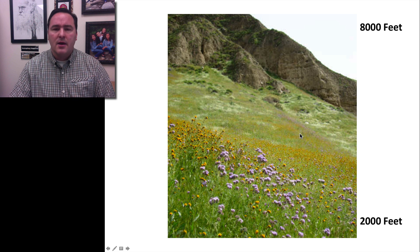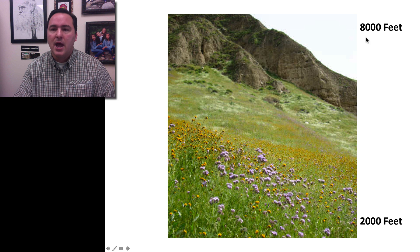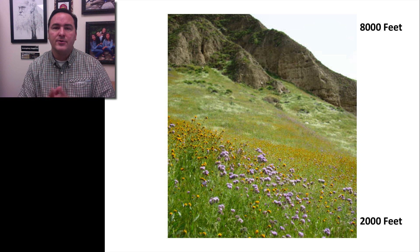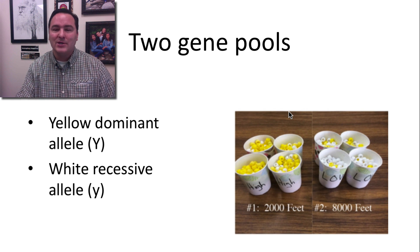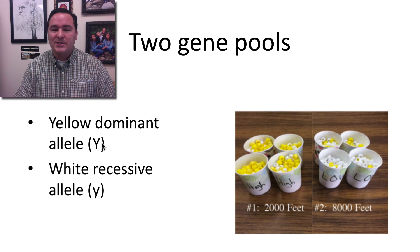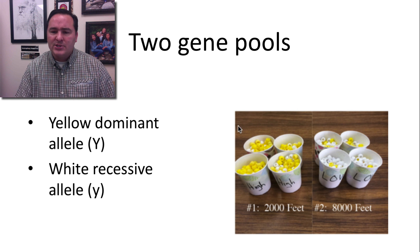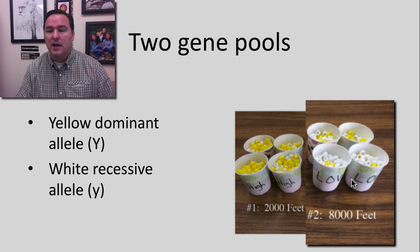Let's look into this with a hypothetical situation. Imagine we have some flowers on a hillside — a population at 2,000 feet and another population at 8,000 feet. We're going to look at just one characteristic: these flowers are either yellow or white. To represent our flowers, we're going to use beads. The yellow dominant allele, represented by a yellow bead, is denoted big Y. The white recessive allele is little y. Population one has more yellow beads, and population two has more white beads.